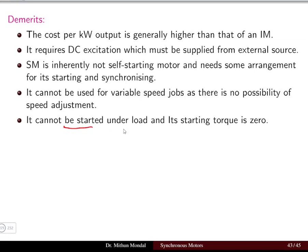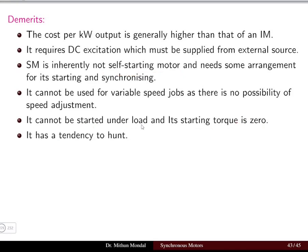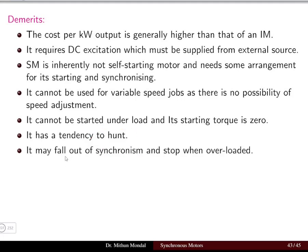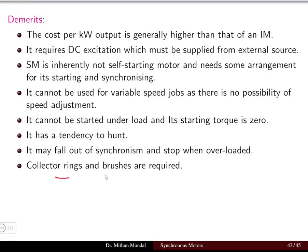The fifth demerit is that it cannot be started under load and the starting torque is zero. The sixth demerit is its tendency to hunt — the rotor may oscillate at a speed slightly less than or more than synchronous speed. The seventh demerit is that it may fall out of synchronism and stop when overloaded.